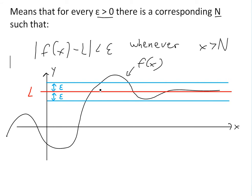What this means is that whenever x is greater than N. If we draw a vertical line down, this is where the function intersects the epsilon band, and this intersection point gives us our N value. So now whenever x is greater than N — on this side — f(x) can be any value here.